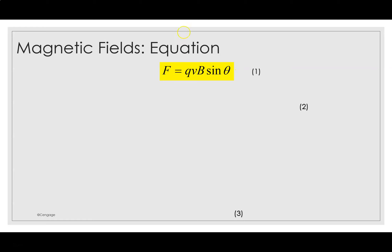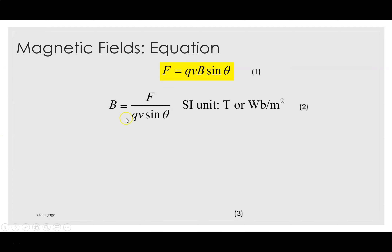The magnetic force is a vector quantity, so it has both magnitude and direction. If a one-coulomb charge moves in a direction perpendicular to a magnetic field of one tesla with a speed of one meter per second, the magnetic force exerted on the charge is one newton. The unit of the magnetic field is the tesla. The equation for the magnetic field is: B = F / (qv sinθ).